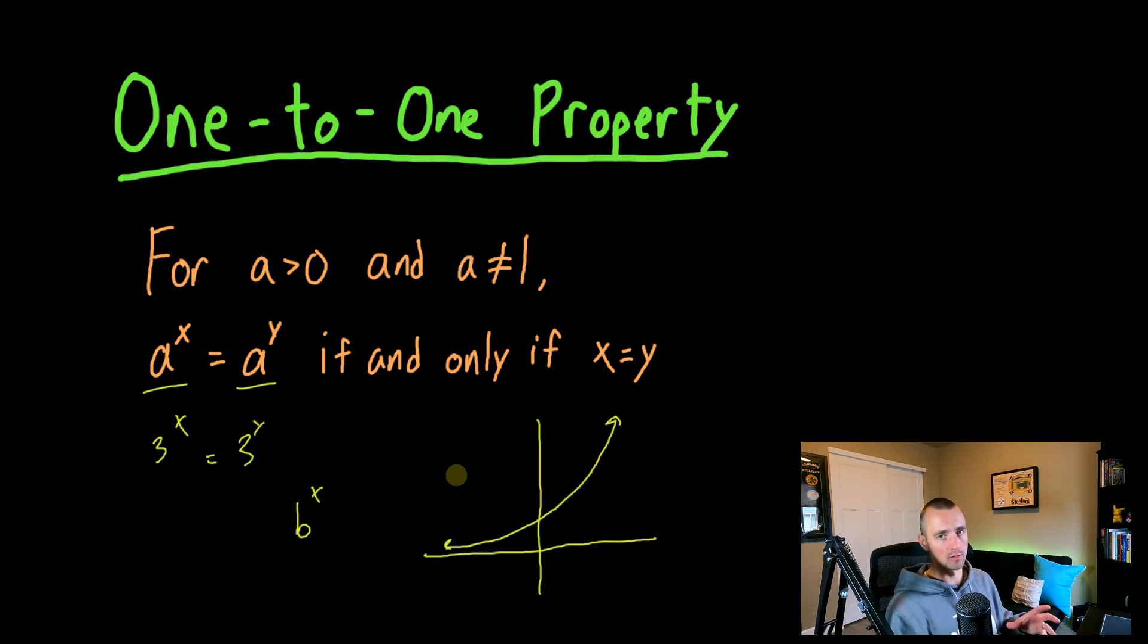So that's important because what it allows us to do is use this one-to-one property to say if we have some specific output, if we have some value for three to the x power, for example, there must be exactly one x value that gets us the output that we're looking for, which in this case would be whatever's on the other side of the equation.